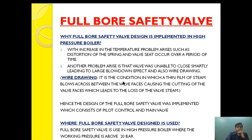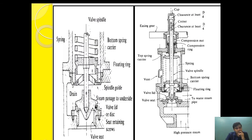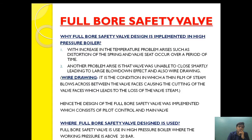This problem was overcome by the full bore safety valve. Another problem was wire drawing. Wire drawing is a condition in which a thin film of steam blows across between the valve face and causes cutting of the valve face, which leads to loss of steam. During the blowdown effect, as the valve was seating, a thin film of steam was continuously escaping. When the valve was finally moving to the closed position, this steam was acting like a wire, causing cutting on the valve surface and reducing the efficiency of the valve.